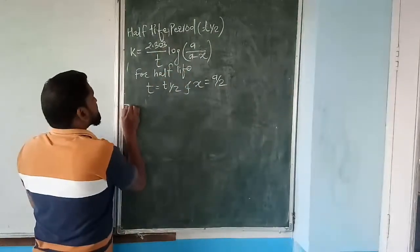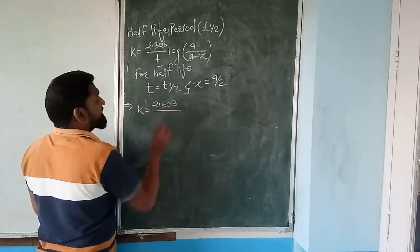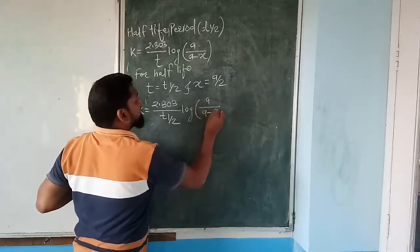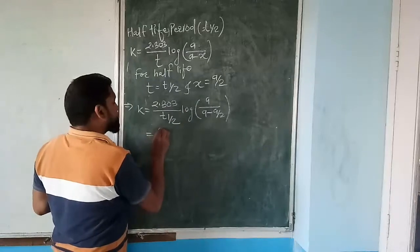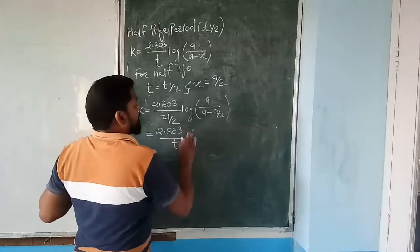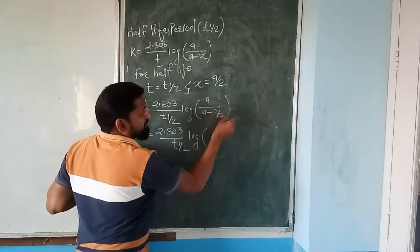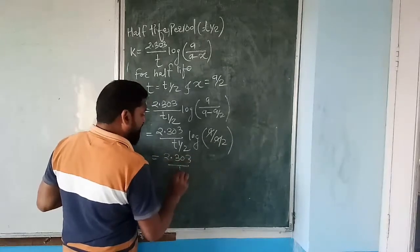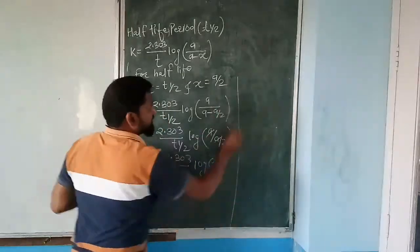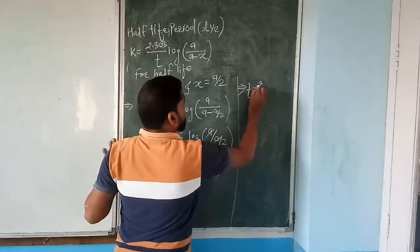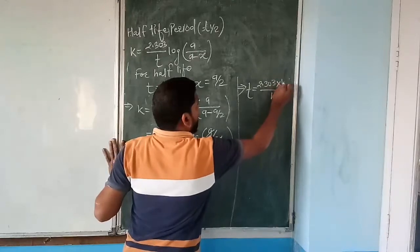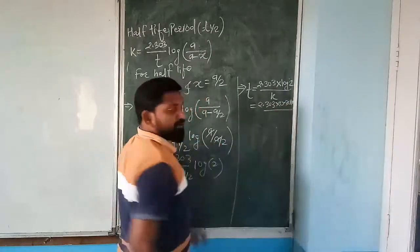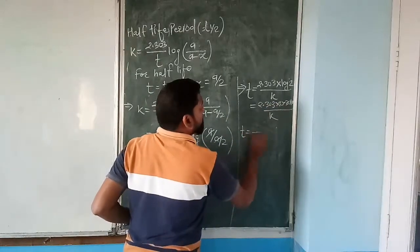Substituting T = T½ and x = a/2 into k = (2.303/T) × log[a/(a - x)]: k = (2.303/T½) × log[a/(a - a/2)] = (2.303/T½) × log[a/(a/2)] = (2.303/T½) × log 2. Therefore T½ = (2.303 × log 2)/k = (2.303 × 0.3010)/k = 0.693/k.